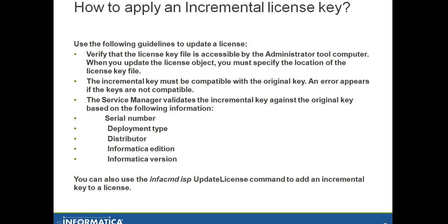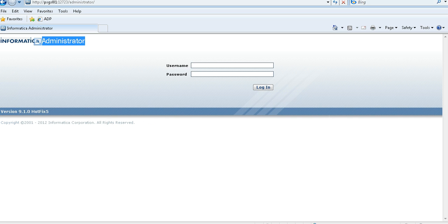The service manager validates the incremental key against the original key based on the following information: serial number, deployment type, distributed Informatica edition, and Informatica version. There are two ways to apply an incremental license key: the first method is using Informatica Administrator, and the second method is using the infacmd isp UpdateLicense command.